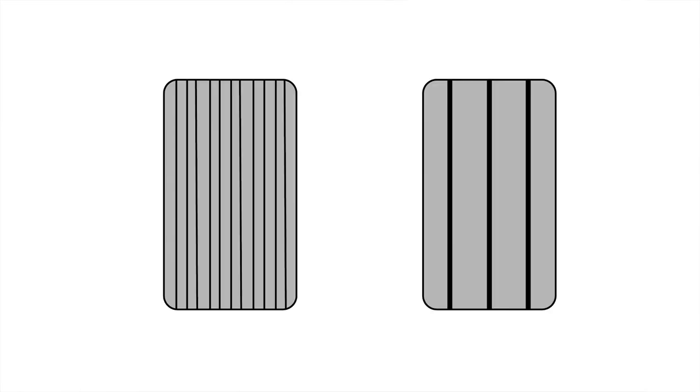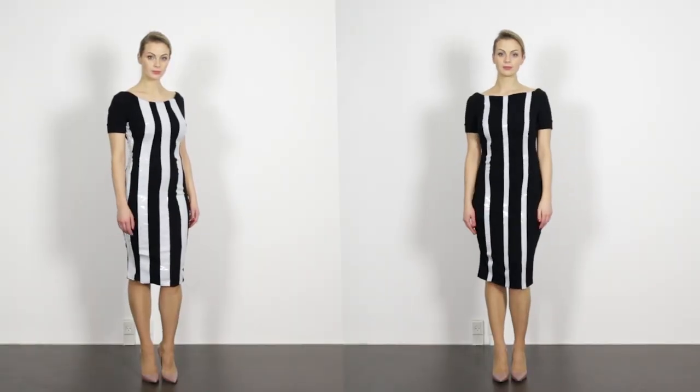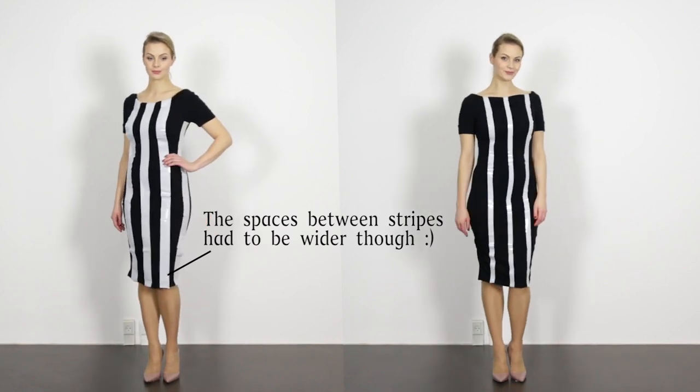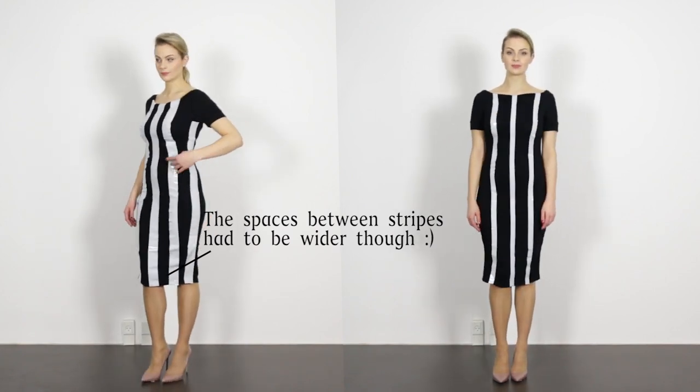If one vertical line has a slimming effect, what if I would place a lot of vertical lines? The closer they are spaced together, the slimmer and longer the effect is created. So the rectangle on the left looks slimmer and longer. And here you can see that the one on the left looks wider because the wider the lines are, the heavier the effect.